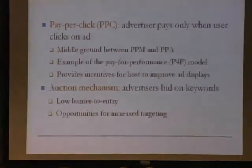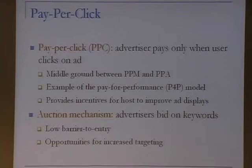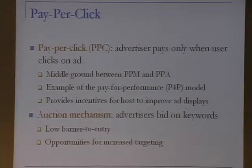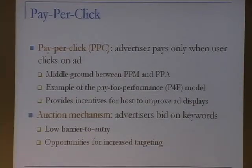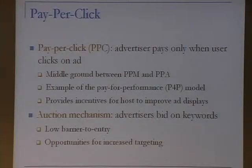Another innovation was that advertisements were sold through an auction mechanism where advertisers bid on keywords. This had two huge advantages: it allowed increased targeting opportunities by specifying what keywords you wanted your ad to appear on, and it created a low barrier to entry for small mom-and-pop shops on the internet. Small businesses can't afford to negotiate banner advertising contracts, so the auction mechanism let them have online ads easily.